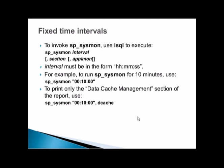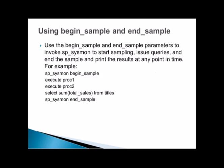To invoke sp_sysmon you can use isql to execute sp_sysmon with interval, section, and application monitoring options. The interval must be in the form of hours:minutes:seconds. For example, to run sp_sysmon for 10 minutes use: sp_sysmon '00:10:00'. To print only the data cache management section of the report, you can specify the section such as 'dcache'. You can also specify the time period, section, and use begin_sample and end_sample parameters.